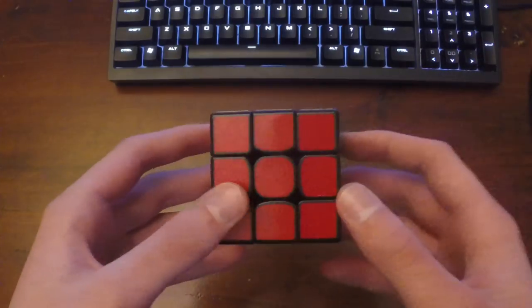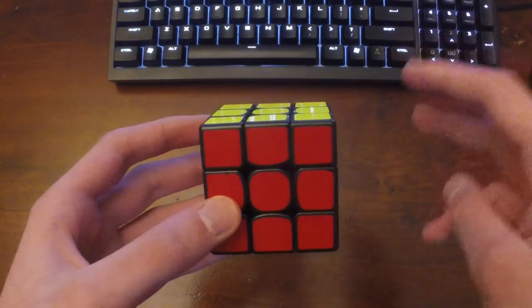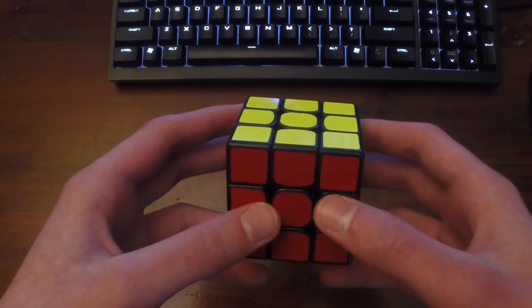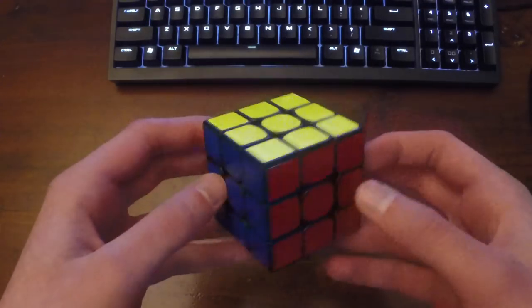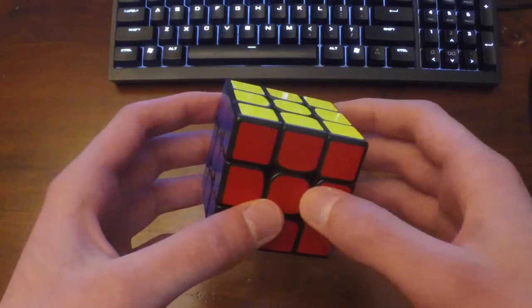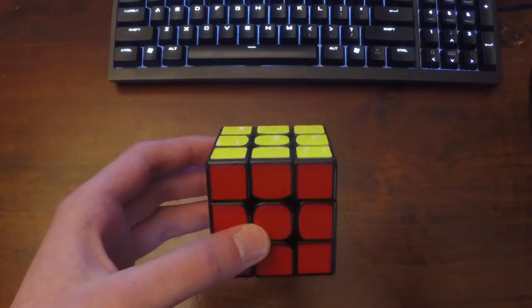So just as a quick background, you've got three types of rotations. You've got X and its primes, Y and its primes, and Z and its primes. So this explanation will show you how it works mathematically. It's actually really simple.